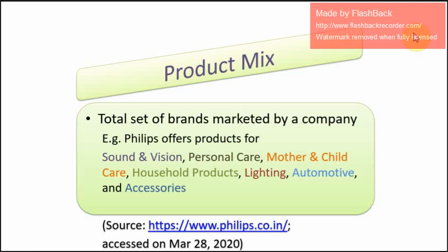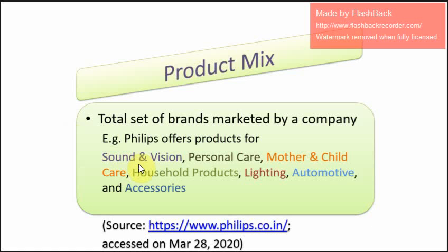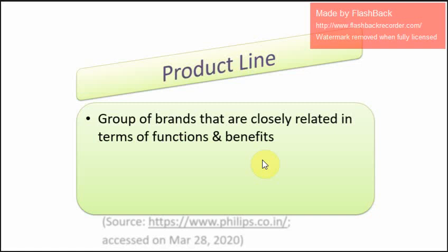To understand product mix further, we also need to understand the concept of product line. A product line is a group of brands that are closely related in terms of functions and benefits. In the last slide we saw that Philips has product categories such as sound and vision, personal care, mother and child care, household products, lighting, automotive, and accessories.